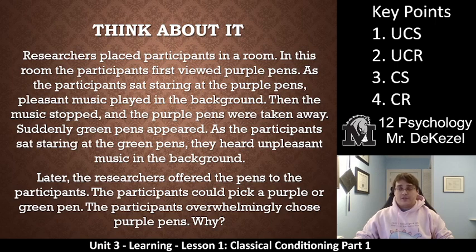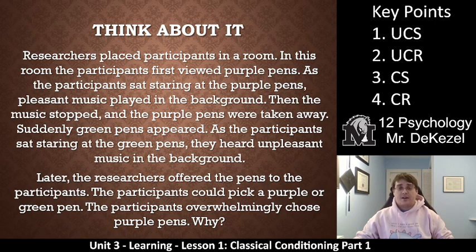This part you don't need to write down — the first two slides, this think-about-it part. Let's just read it and think about it. Researchers placed participants in a room where they first viewed purple pens. As the participants sat staring at purple pens, pleasant music played in the background. The music then stopped and the purple pens were taken away. Suddenly, green pens appeared, and as participants stared at them, they heard unpleasant music. Later, the researchers offered the pens to the participants — they could choose purple or green. The participants overwhelmingly chose purple pens. Why do we think that might be?